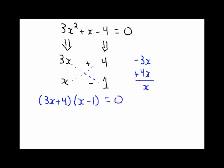Set them to 0 and solve away. 3x plus 4 equals 0, giving us x negative 4 over 3. Here x minus 1 equals 0, producing an answer x equals 1. There are our 2 answers.